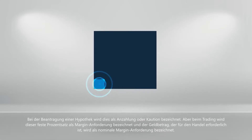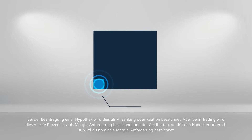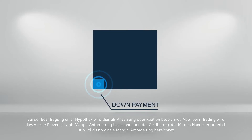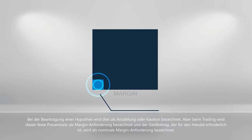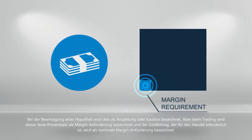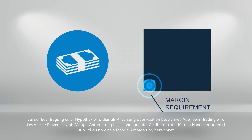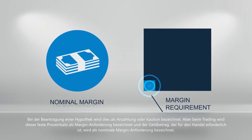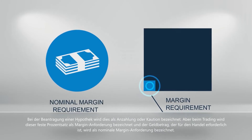When applying for a mortgage, this is referred to as the down payment or deposit. But in trading, this fixed percentage is called the margin requirement, and the amount of money required to trade is called the nominal margin requirement.